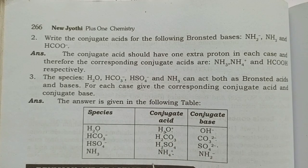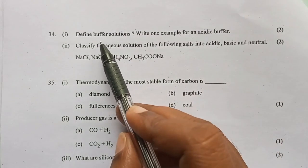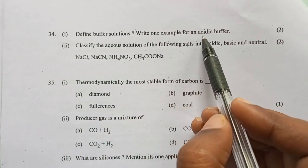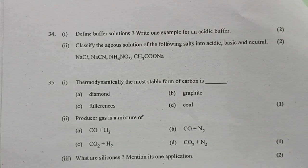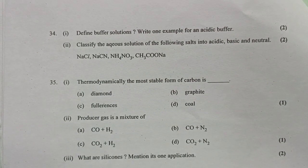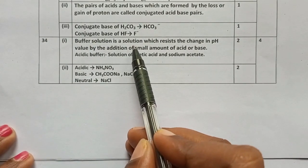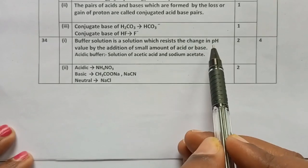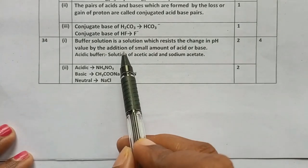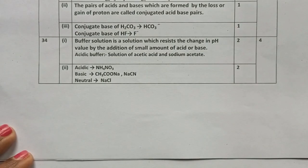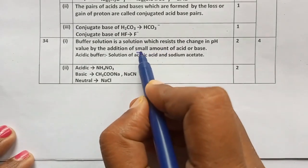The next question is: define buffer solutions and write one example for acidic buffer. Buffer solution is a solution which resists the change in pH value by the addition of a small amount of acid or base.